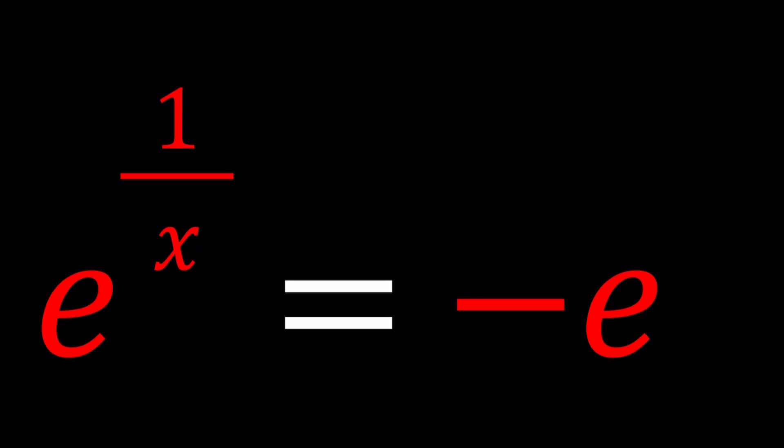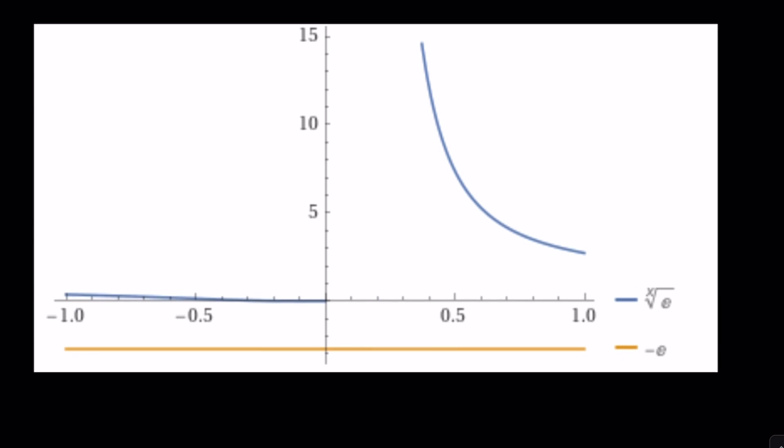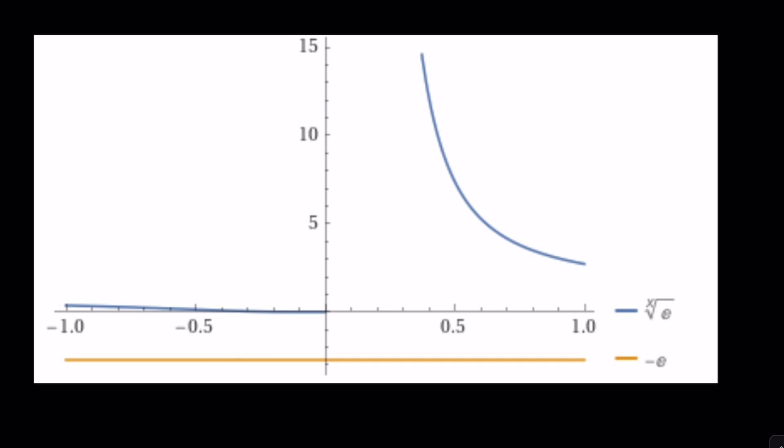Now before we start solving the problem it would make sense if you looked at the graph of these two functions. One of them is a horizontal line y equals negative e and the other graph is y equals e to the power 1 over x which is kind of like an exponential function but the exponent is the reciprocal function so it acts a bit weird as x approaches infinity.